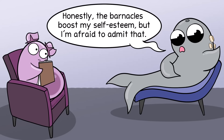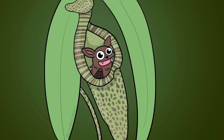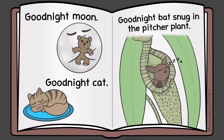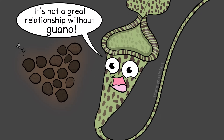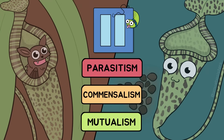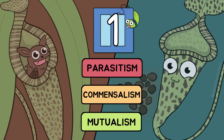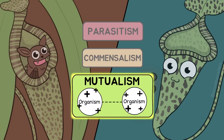You have to really delve into a relationship to determine there isn't more to it. For example, did you know there's a type of bat that roosts inside carnivorous pitcher plants? The bat gets a home in there. You might think only the bat benefits, but the bat's droppings can provide a nitrogen source for the pitcher plant. So if they're both getting a benefit — the bat getting a home and the plant getting nitrogen — that would be mutualism.